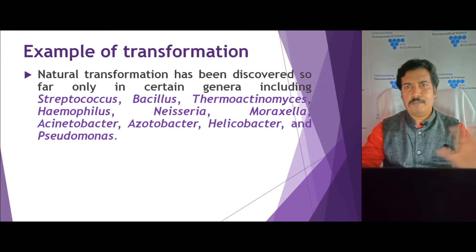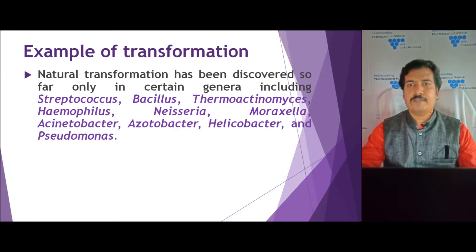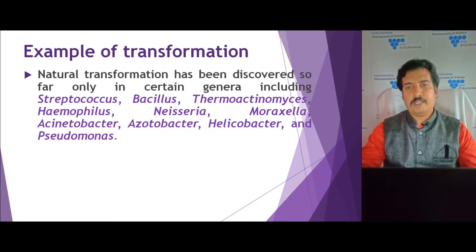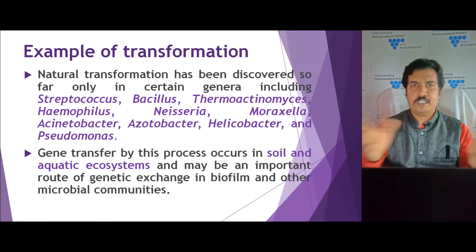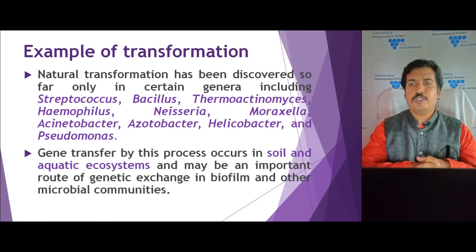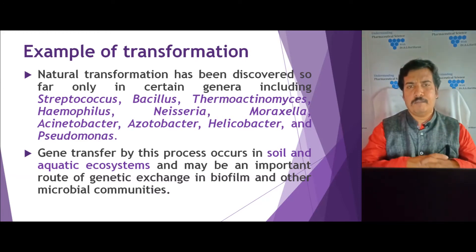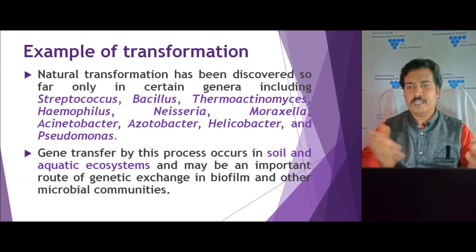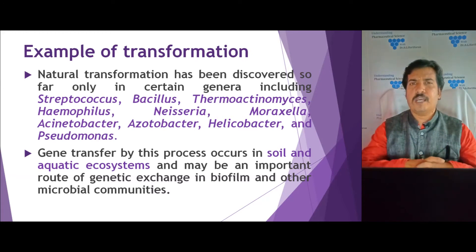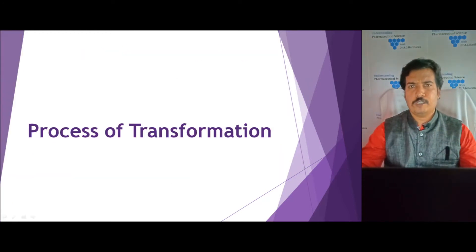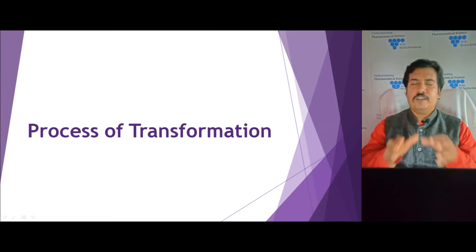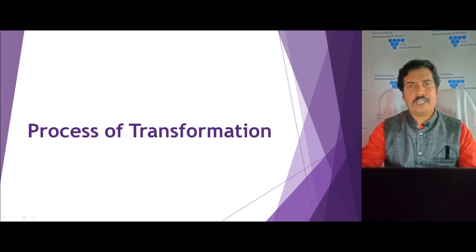Natural transformation can be performed by many competent cells, especially from genera like Streptococcus, Neisseria, Helicobacter, Haemophilus influenzae, Bacillus subtilis, and Pseudomonas. These genera, mostly present in soil and aquatic systems, can exchange genetic information in biofilms and other microbial communities.